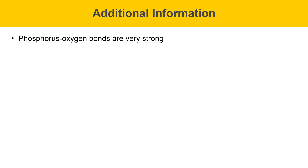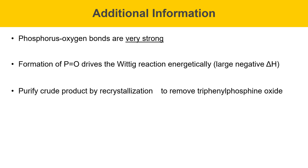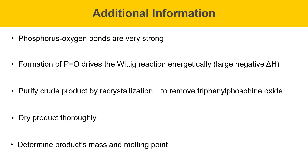Some additional important information about this week's experiment: phosphorus-oxygen bonds are very strong, and the formation of the phosphorus-oxygen double bond actually drives the Wittig reaction energetically due to a large negative delta H associated with forming this bond. In today's experiment, we'll purify the crude product by recrystallization to remove the triphenylphosphine oxide co-product. Then we'll need to dry that product thoroughly before determining its mass and melting point.